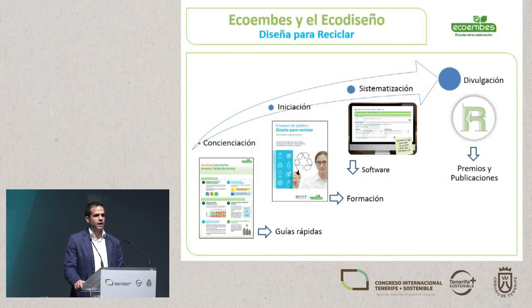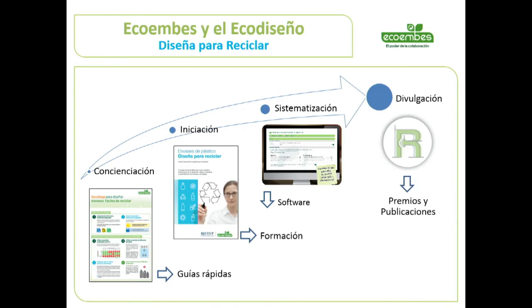In Ecoembes, we support partner companies in the design and marketing process of sustainable materials that are easier to recycle. We work in four main areas. First, awareness raising of the need to be aware of the process. We have simple guidelines — guidelines that are easy to apply and easy to use, so that professionals involved can understand that it's easy to work in this area. The next stage is initiation: to begin to widen knowledge. We provide training at this stage, and we organise workshops and face-to-face courses.